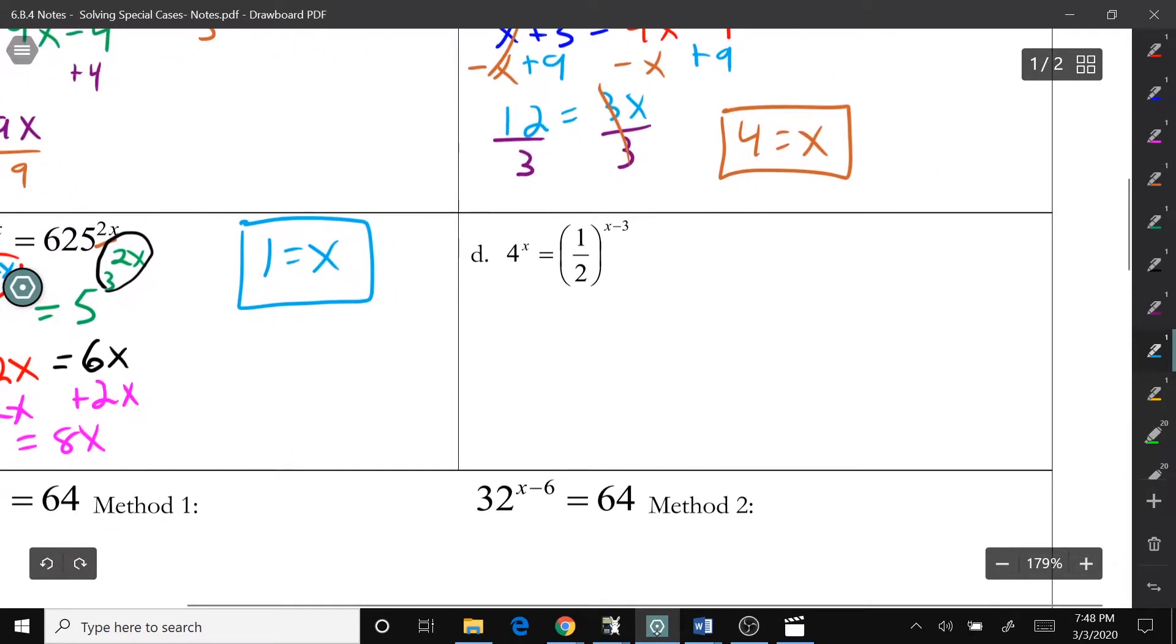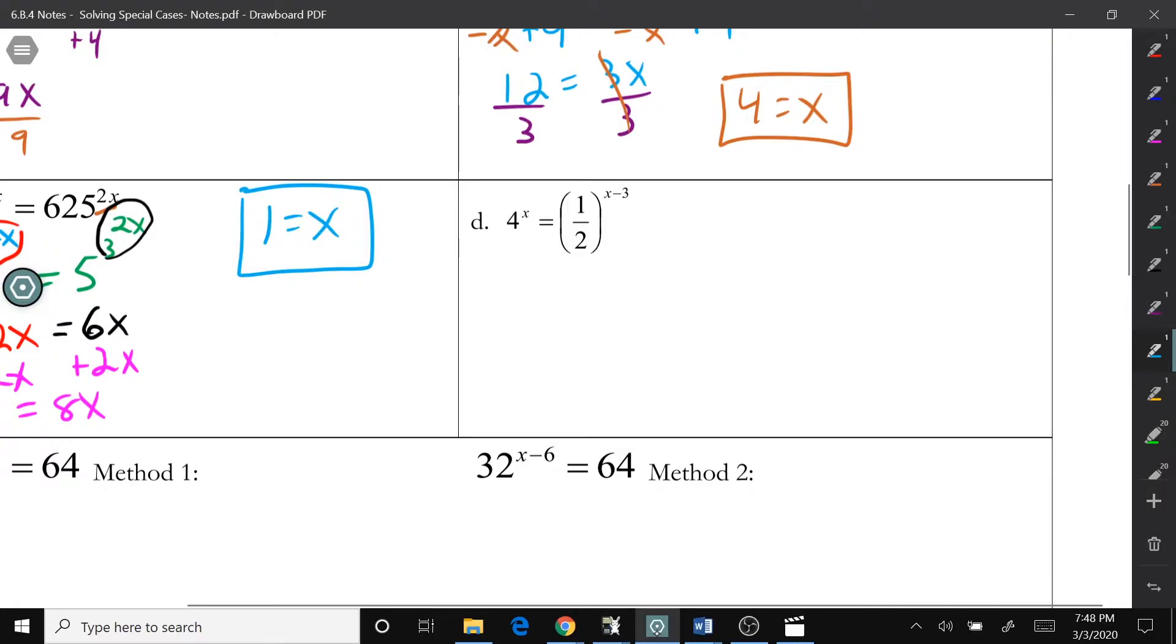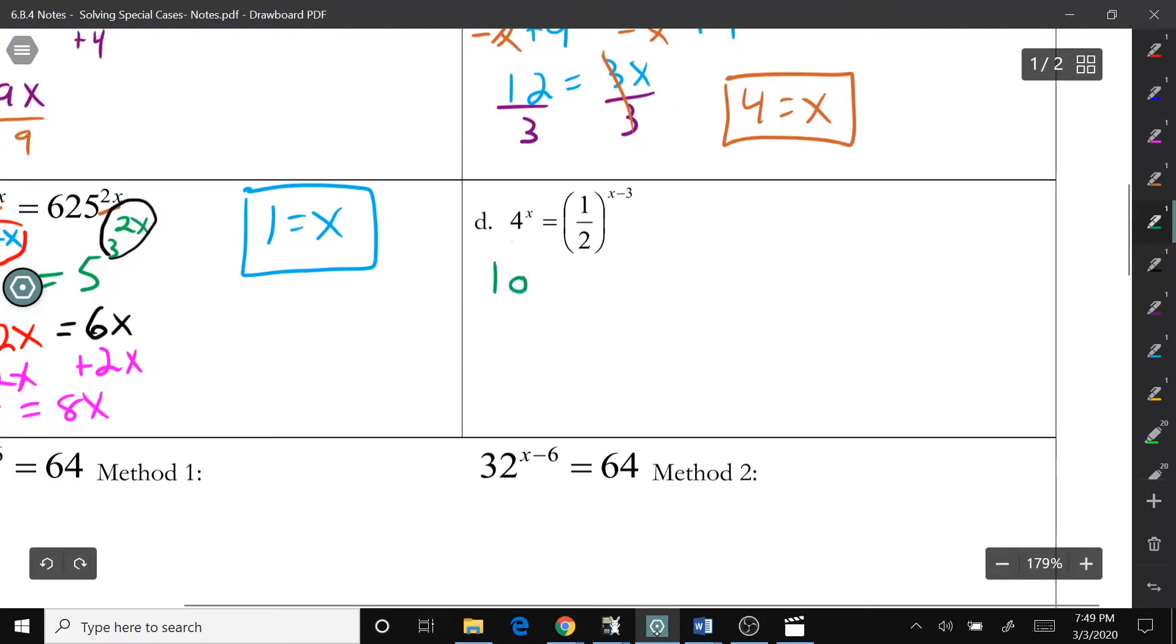If we look at letter D, that one is a little bit more confusing. You're sitting there, okay, I don't know, how can I make 4 into a base and 1 half into a base. So, a problem like this, you probably would spend more time trying to find the shortcut than you would if you just solved this normally. So, the way I would recommend doing this is taking the log of both sides. What I mean by that is we're going to do log, and we're going to use our calculator so it doesn't matter what base.